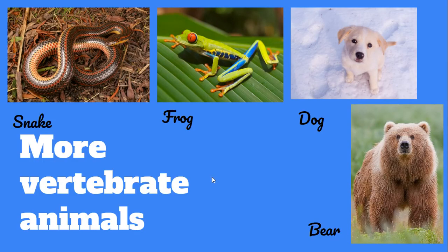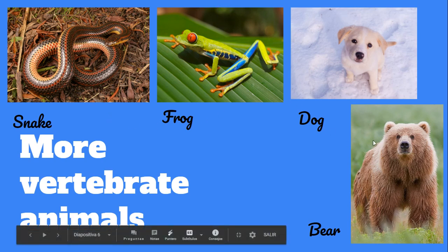There are more vertebrate animals. For example, the snake, the frog, the dog, and the bear. They are really, really beautiful animals.